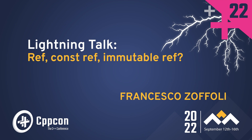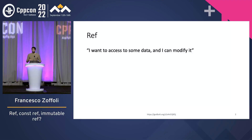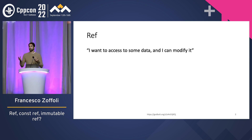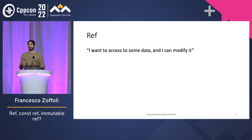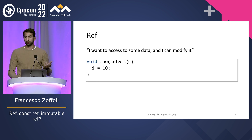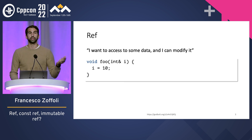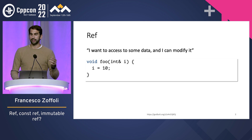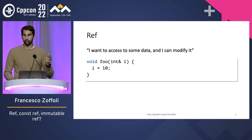We are going to be talking about ref, const ref, and immutable ref. With a reference, let's say you have a contract that says you want to access some data and you can modify it. This is super easy. You have a function, you get a mutable ref, you can modify the data, and you're good to go.